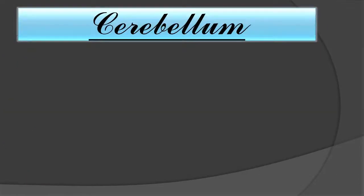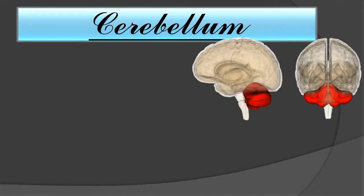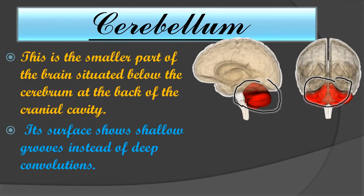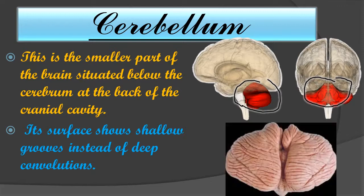Now let us understand the cerebellum. It is a smaller part of the brain situated below the cerebrum at the back of the cranial cavity. Its surface shows shallow grooves instead of the deep convolutions found in the cerebrum.